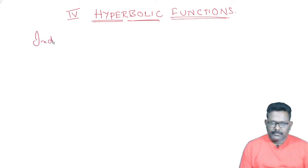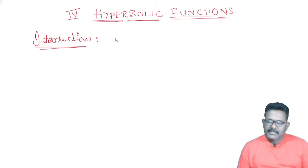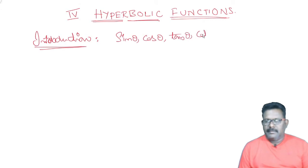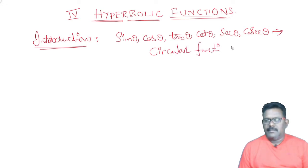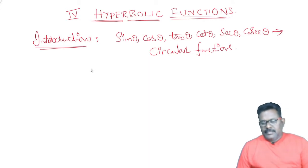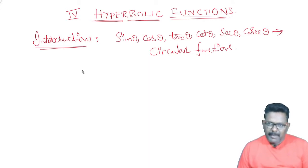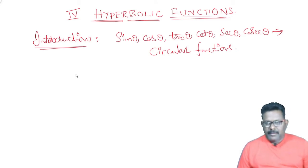Introduction: if you want to know the trigonometric functions — sin theta, cos theta, tan theta, r theta, secant theta, cosecant theta — these are called circular functions. This chapter on hyperbolic functions focuses on a different set of functions.